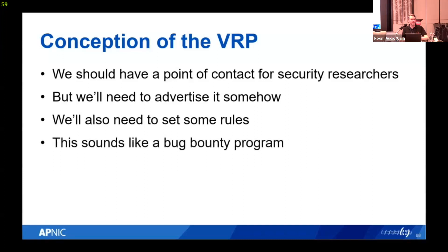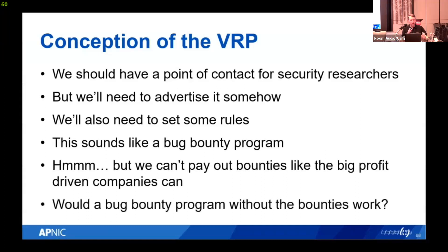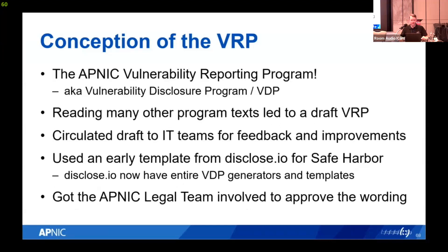This sounds a lot like a bug bounty program, where people are paid money for bugs or vulnerabilities they find. But APNIC isn't a big corporation with lots of money, so we can't pay out bounties. The question was: would a bug bounty program work without the bounties? Could we publicly say we can't pay you money, but if you find a vulnerability, tell us here? Thus was born the APNIC Vulnerability Reporting Program — sometimes called a Vulnerability Disclosure Program, or VRP or VDP.